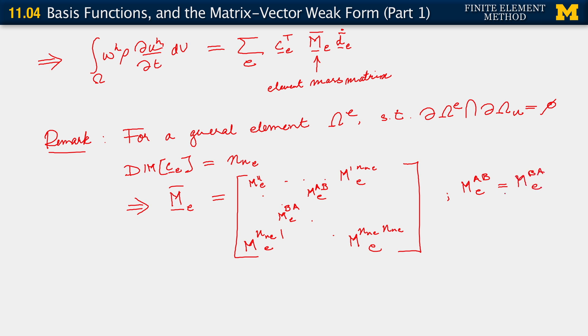All right? It just follows from the definition of one of those components, right? Each of them is just the integral of N_a times N_b multiplied by rho integrated. All right? So they're symmetric, right? So basically we have M, M bar as a symmetric matrix. Okay. All right.